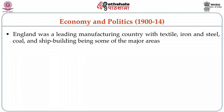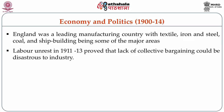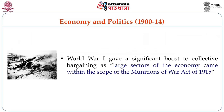Turning our attention to economy and politics from 1900 to 1914 in England: England was a leading manufacturing country with textile, iron and steel, coal and shipbuilding industries dominating certain areas as a major force. Labour unrest from 1911 to 1913 proved that lack of collective bargaining could be disastrous to industry. The First World War gave a significant boost to collective bargaining as large sectors of the economy came within the scope of the Munitions War Act of 1915.